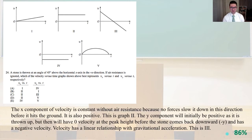So it is also positive. This is graph 2. The y component will initially be positive, as is thrown up, but then will have zero velocity at the peak height before the stone comes back downward, which is the minus y, and has a negative velocity. Velocity has a linear relationship with gravitational acceleration. This is number 3. So v of x for t is number 2, v of y versus t is number 3, and those two together is answer C.